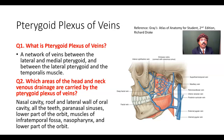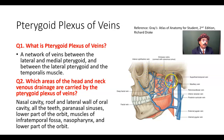It also drains the muscles of the infratemporal fossa, the nasopharynx, and the lower part of the orbit. So, this entire region's venous drainage is carried out by the pterygoid plexus of veins.